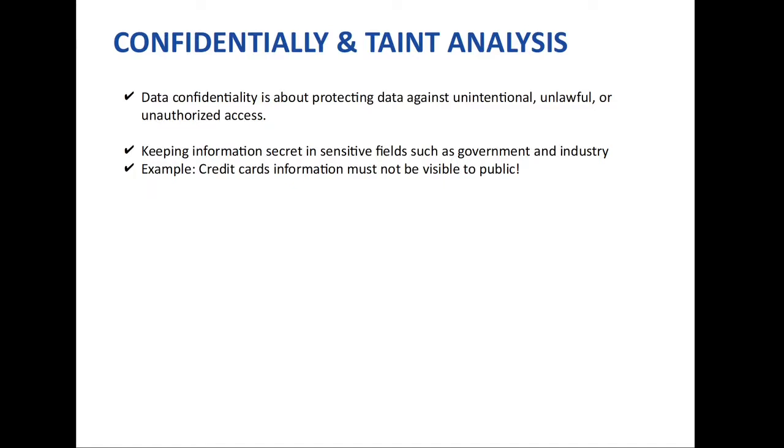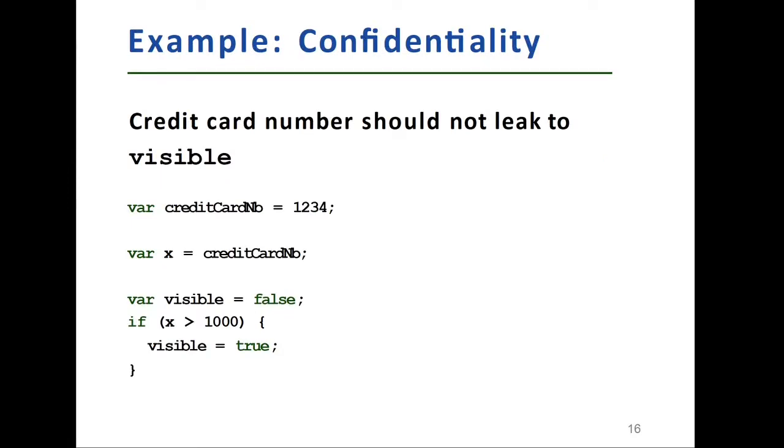One of the examples would be like credit card information must not be visible to public, right? Here is an example that illustrates this point. Our policy in this piece of code is credit card number should not leak to visible. And visible, we can imagine, this is a public variable or is a general variable or global variable.